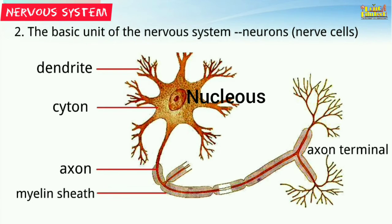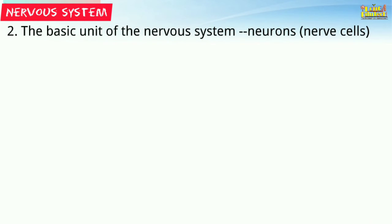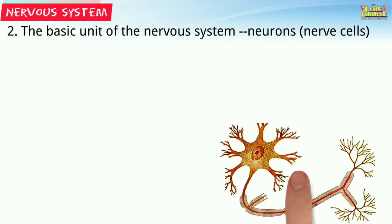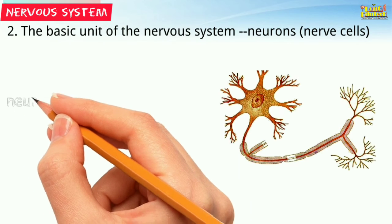The stimulus received by the dendrites gets transported into the cytone. The cytone then transports these signals in the form of an electrical impulse to the axon. The axon transmits that signal in the form of chemical signals to the axon terminals, passing it on to the next neuron.